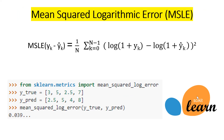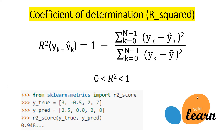Then we have the Mean Squared Logarithmic Error. As you can see in the formula, we use a logarithm to calculate our error. It is more useful when we do not want to penalize large prediction errors. This formula is also available in scikit-learn by importing the Mean Squared Log Error to calculate the error between the predicted value and the true value.